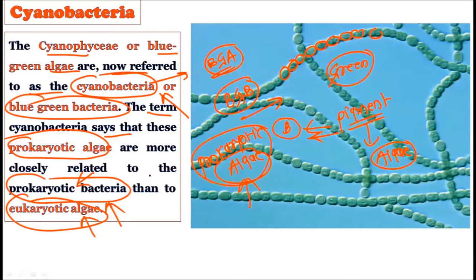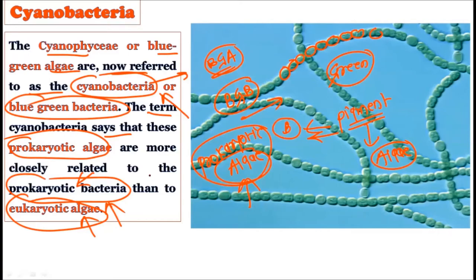Cyanobacteria are nothing but blue-green bacteria. These are bacteria that can perform photosynthesis. Generally they are called prokaryotic algae, but they are more related to the prokaryotic bacteria than the eukaryotic algae. Now consider: the term cyanobacteria indicates these are prokaryotic algae-like organisms.